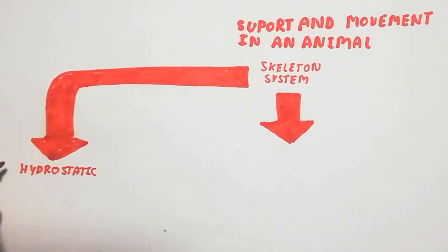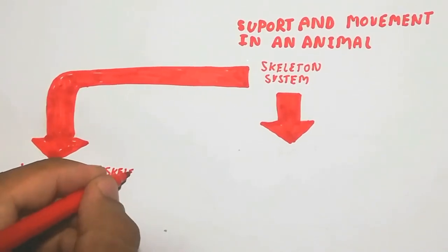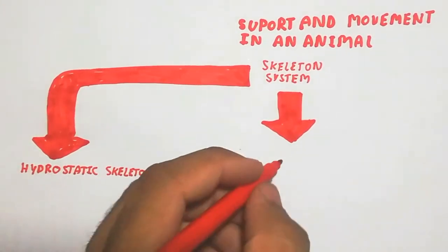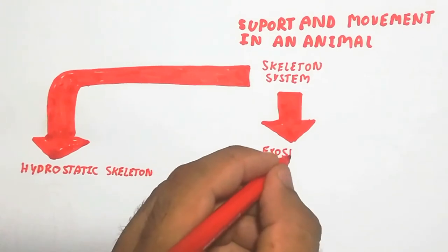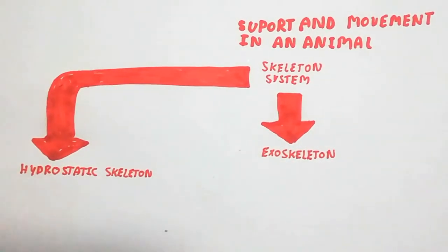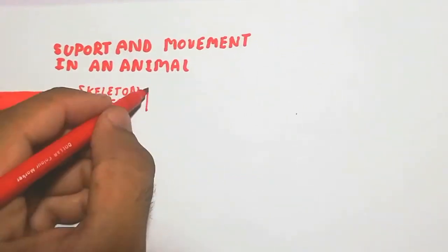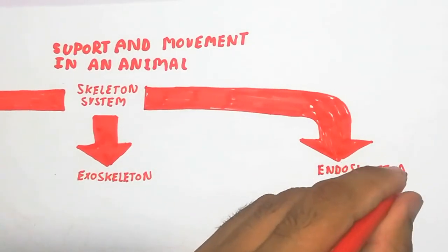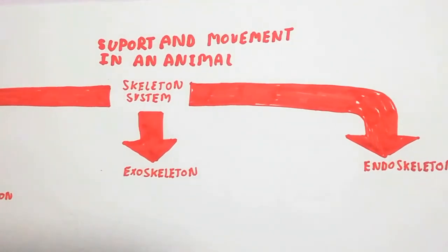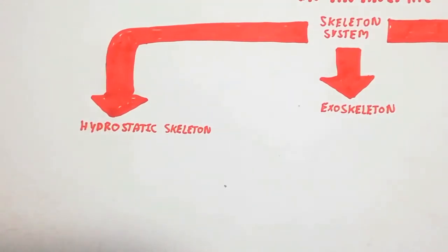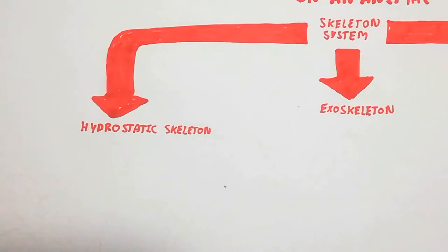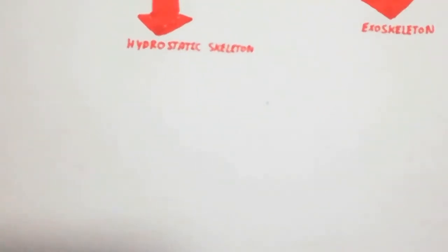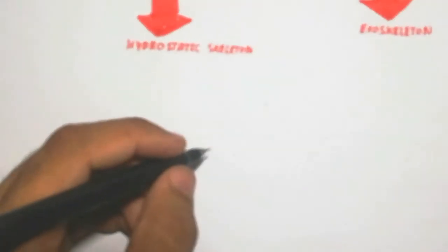First we will talk about the hydrostatic skeleton. The hydrostatic skeleton is present in invertebrate animals — animals which are not composed with a spinal cord or vertebrae. Examples include hydra, octopus, mollusk, snail, and earthworm, all of which are composed of a hydrostatic skeleton.